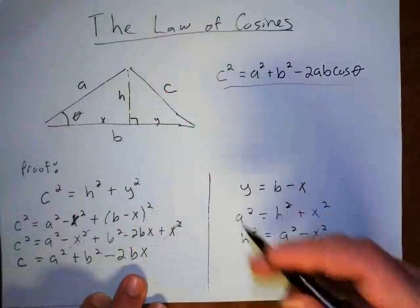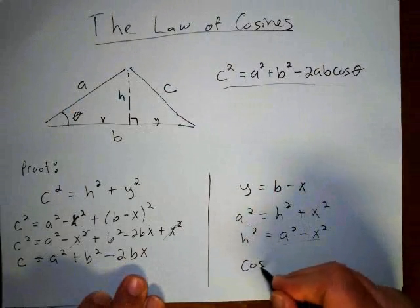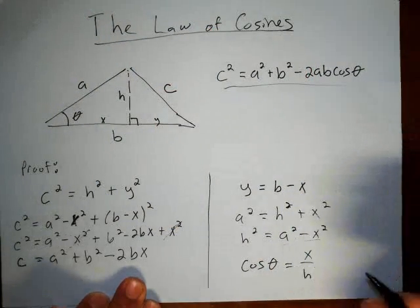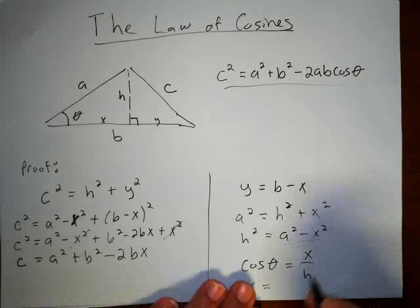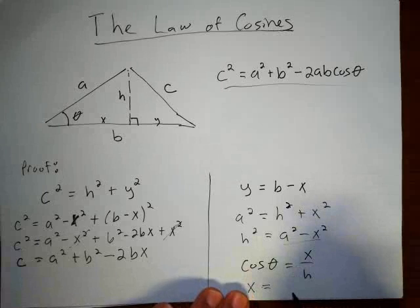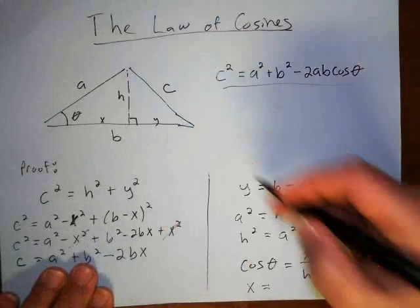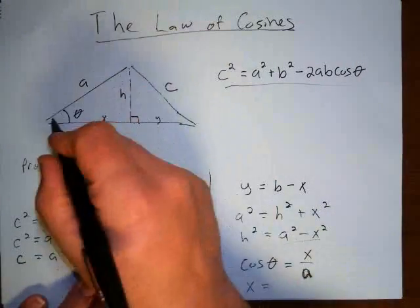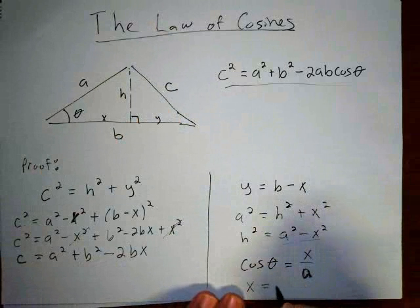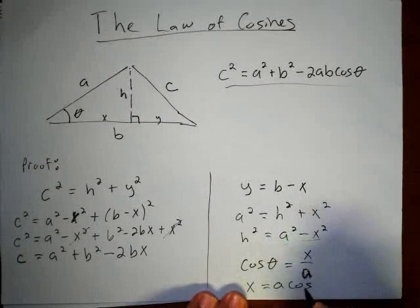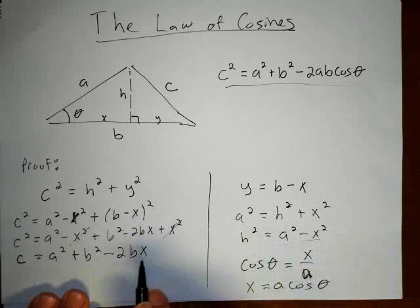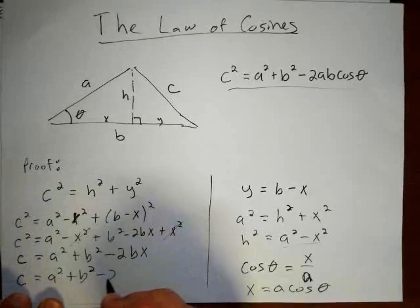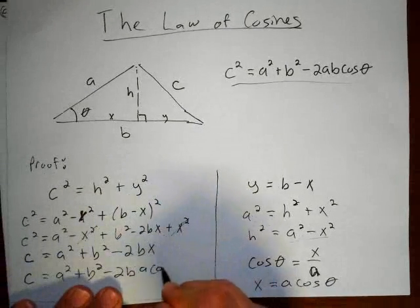Now let's bring in the cosine of that angle. The cosine of theta is the adjacent over the hypotenuse — that's X over A. So X is equal to A times cosine theta. Now I can substitute that in: C squared equals A squared plus B squared minus 2B times A cosine theta.